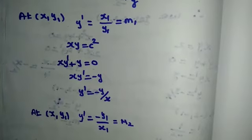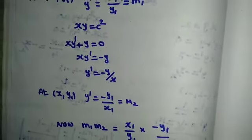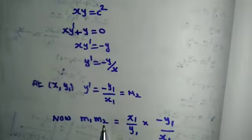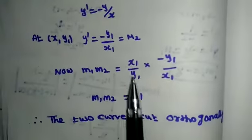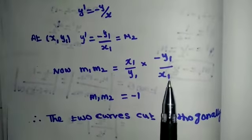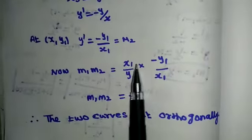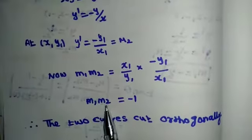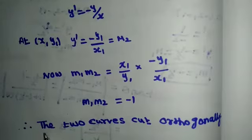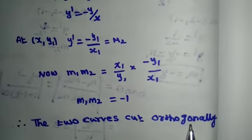This is slope 2. Next we are going to multiply both the slopes. m1 into m2 is equal to, m1 is x1 by y1, m2 is minus y1 by x1. Cancel: x1 x1 cancel, y1 y1 cancel. Remainder m1 m2 is equal to minus 1. The two curves cut orthogonally.